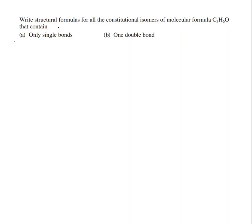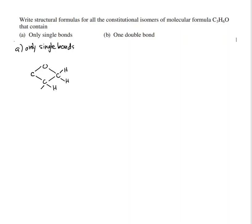Write structural formulas for all the constitutional isomers of molecular formula C3H6O. For part A, with only single bonds, the structure has three carbons and one oxygen arranged in a ring, with each carbon having two H's and two lone pairs on the oxygen. That gives C3H6O, and that is the only one with all single bonds.